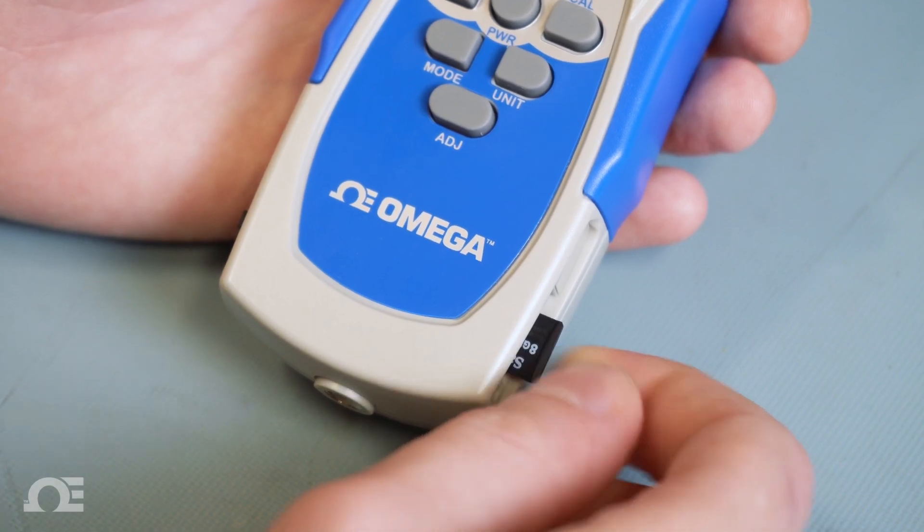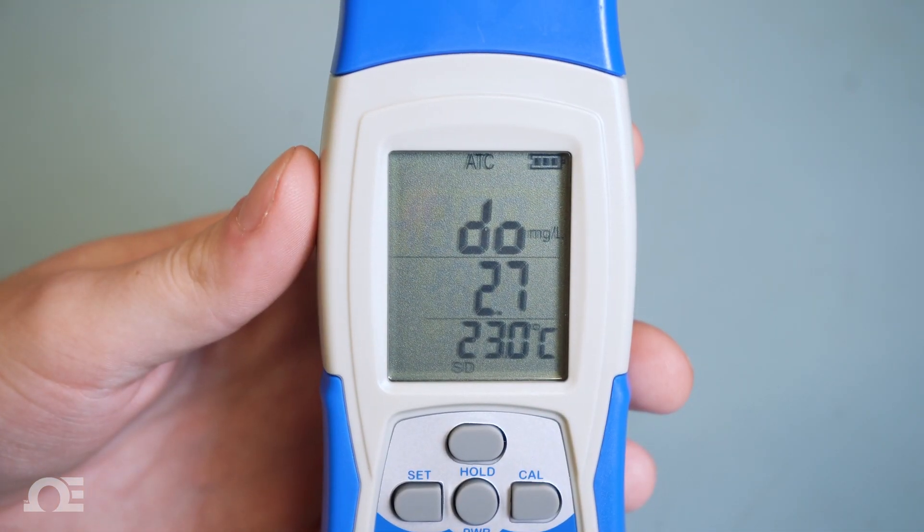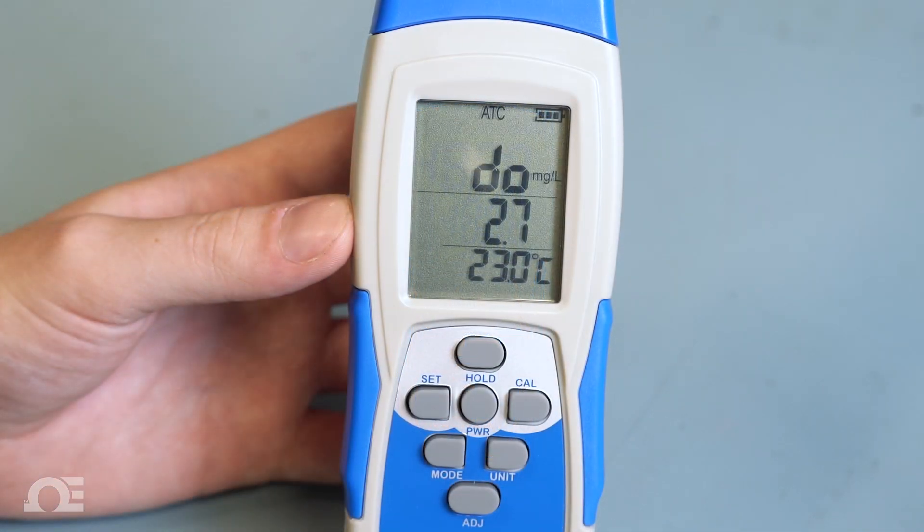You can now insert the SD card, making sure SD appears on the bottom of the screen. Press and hold the adjust key until the SD icon starts flashing at the data logging interval.